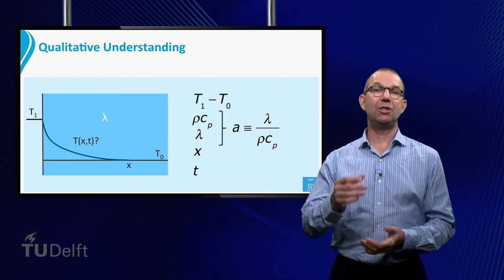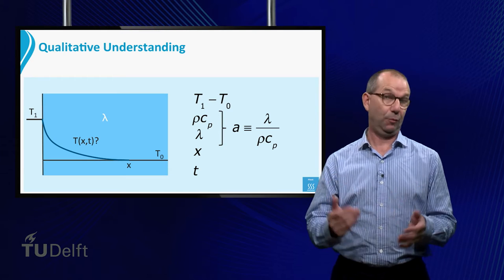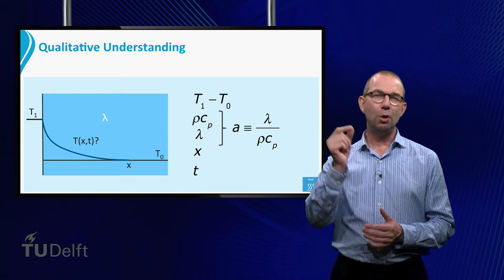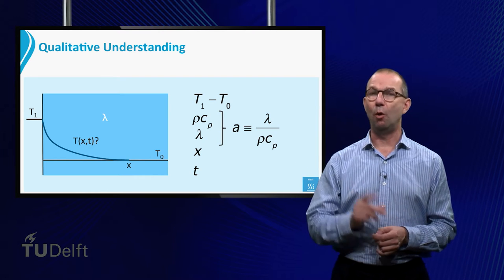It even has the same units, meter squared per second as the diffusion coefficient. Do note however, that it is lambda that needs to be used in Fourier's law, not A.